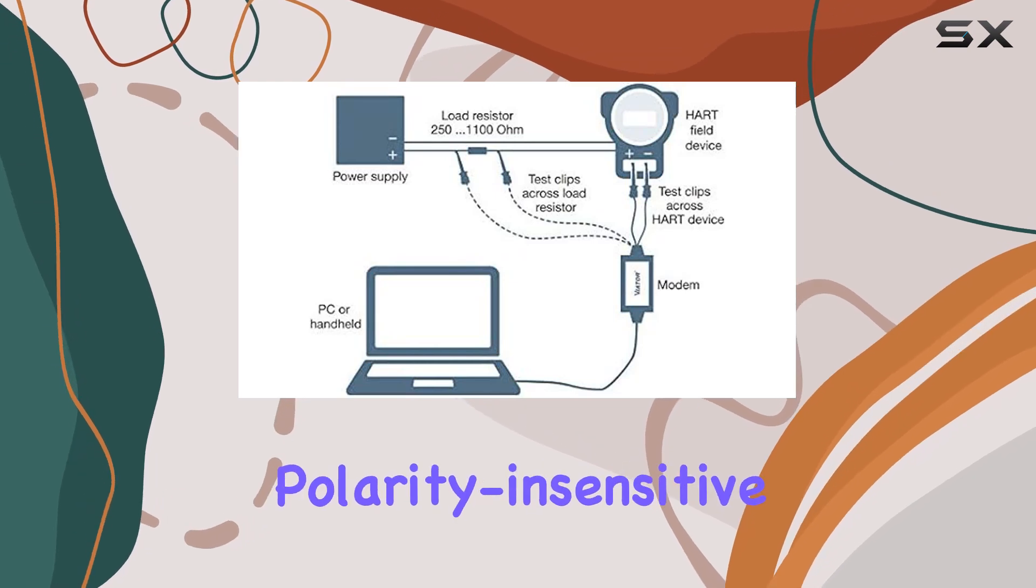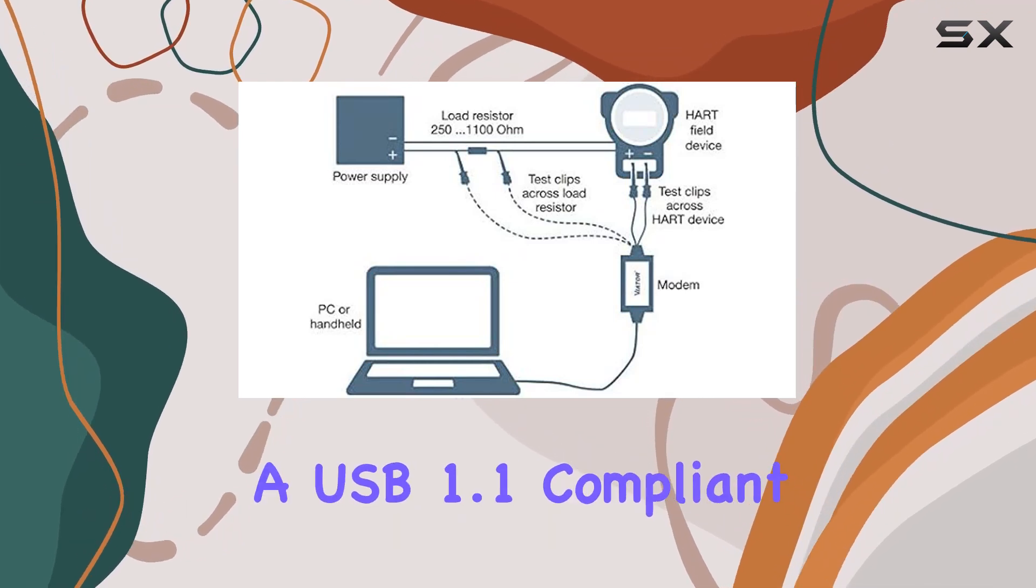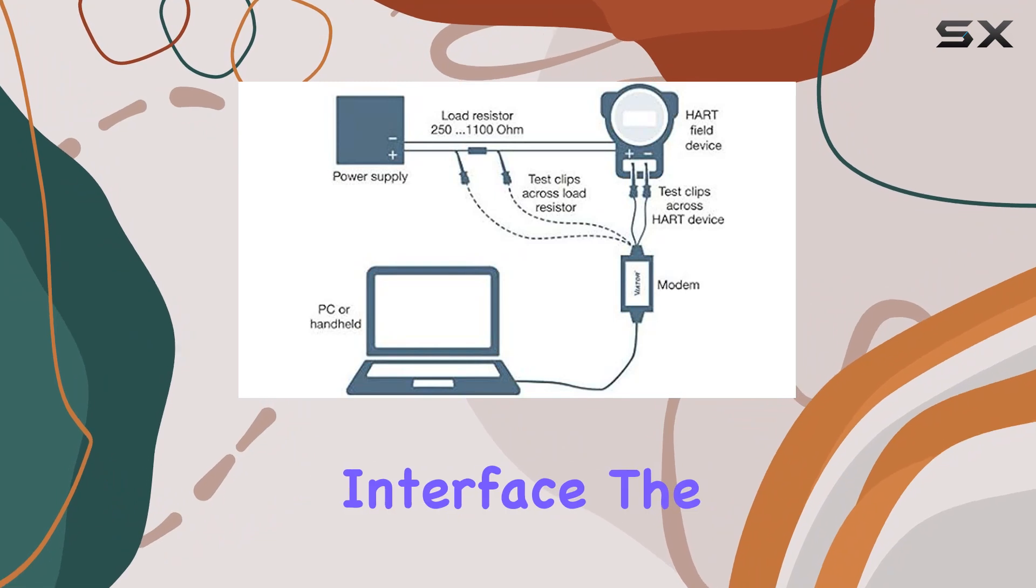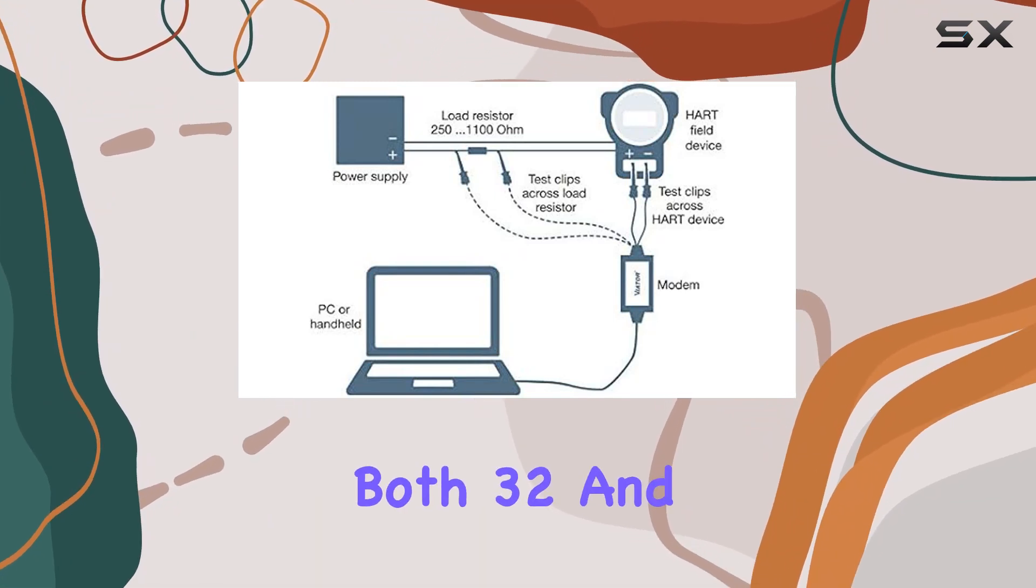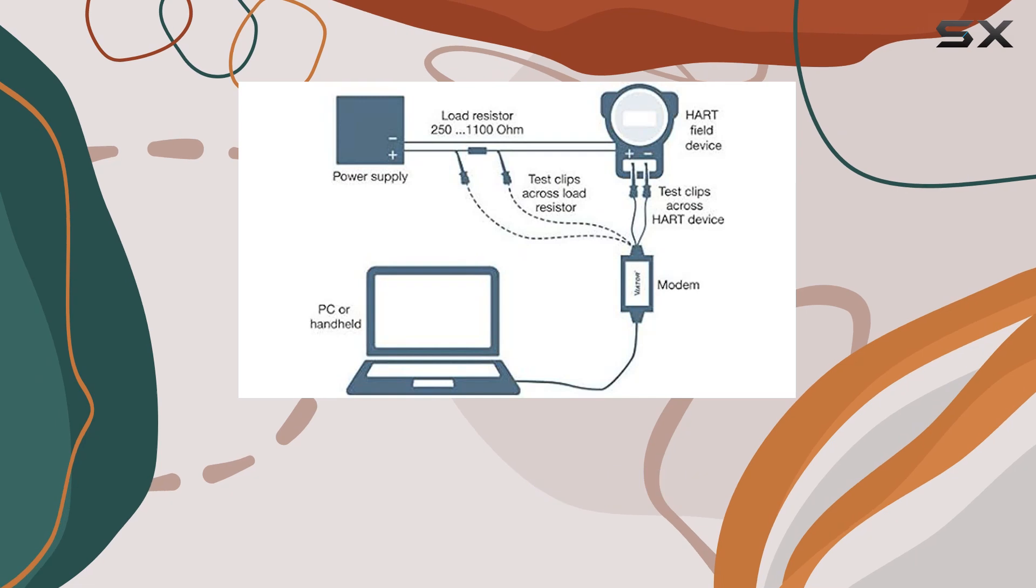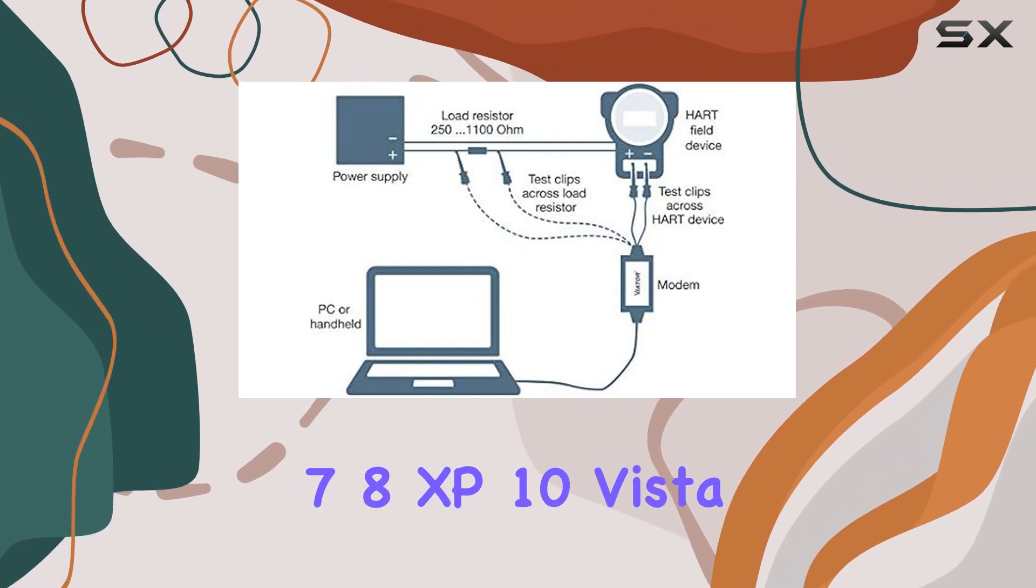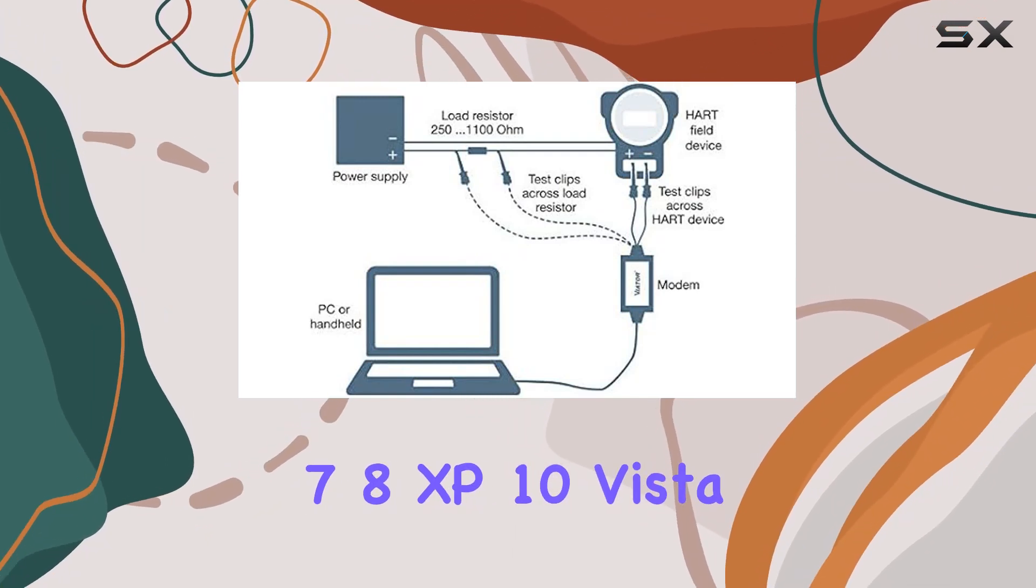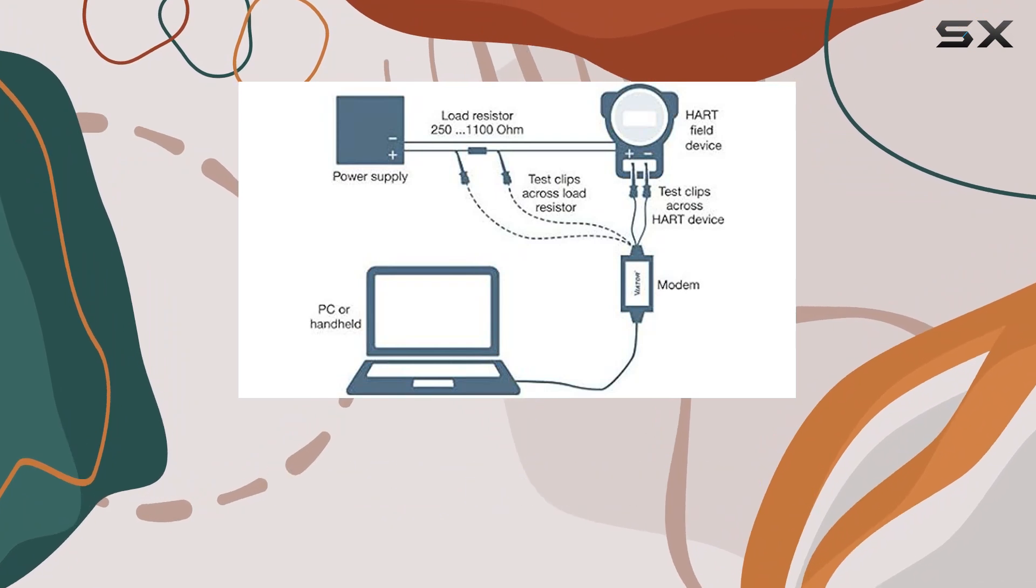Equipped with polarity-insensitive test clips and a USB 1.1 compliant interface, the Viator USB Heart Interface supports both 32 and 64-bit Windows operating systems: 7, 8, XP, 10, and Vista, making it versatile for various setups.